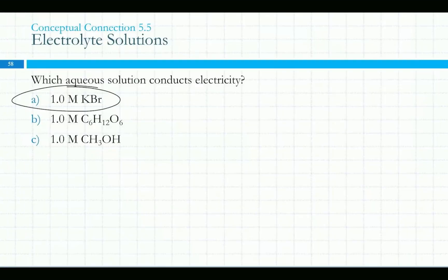A is the only one that conducts electricity here, and that's potassium bromide, because that's an ionic compound. B is molecular, and C is molecular. We're going to get to more about acids and bases.